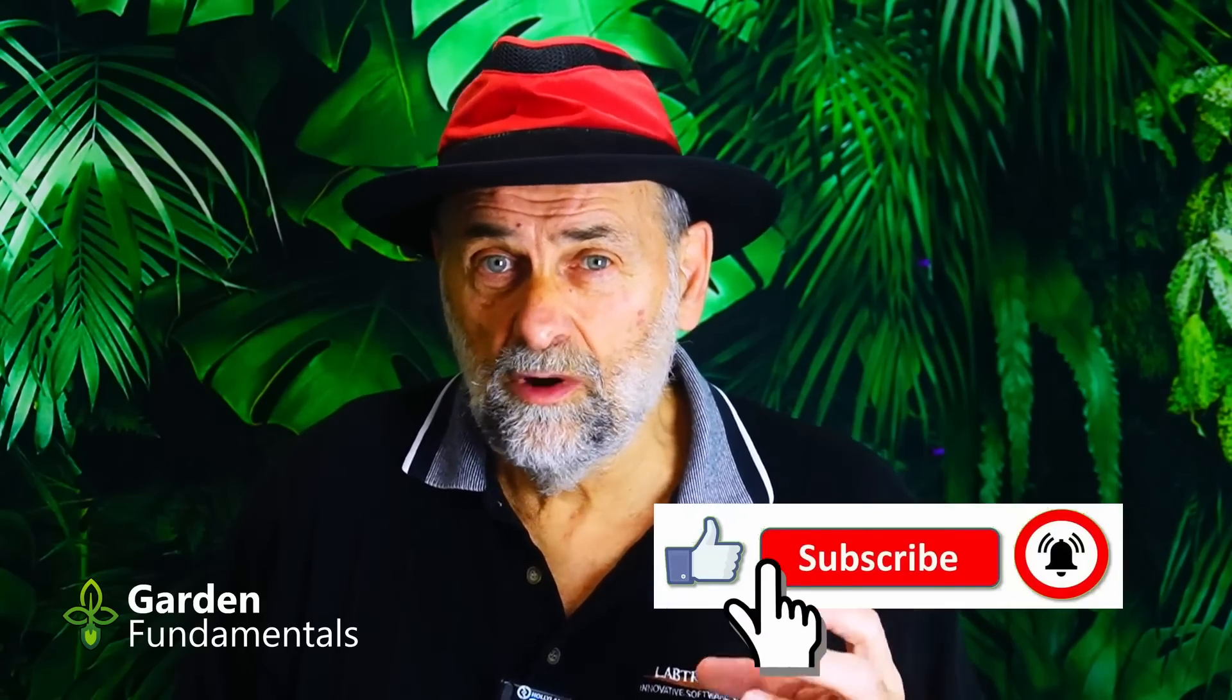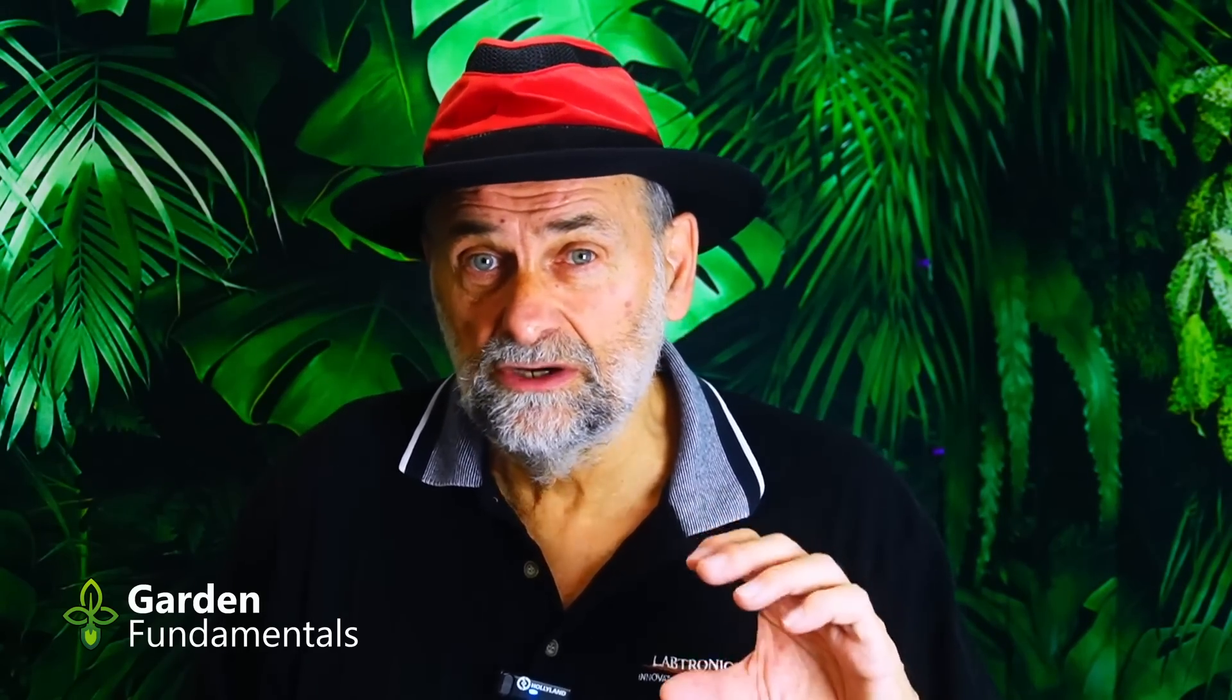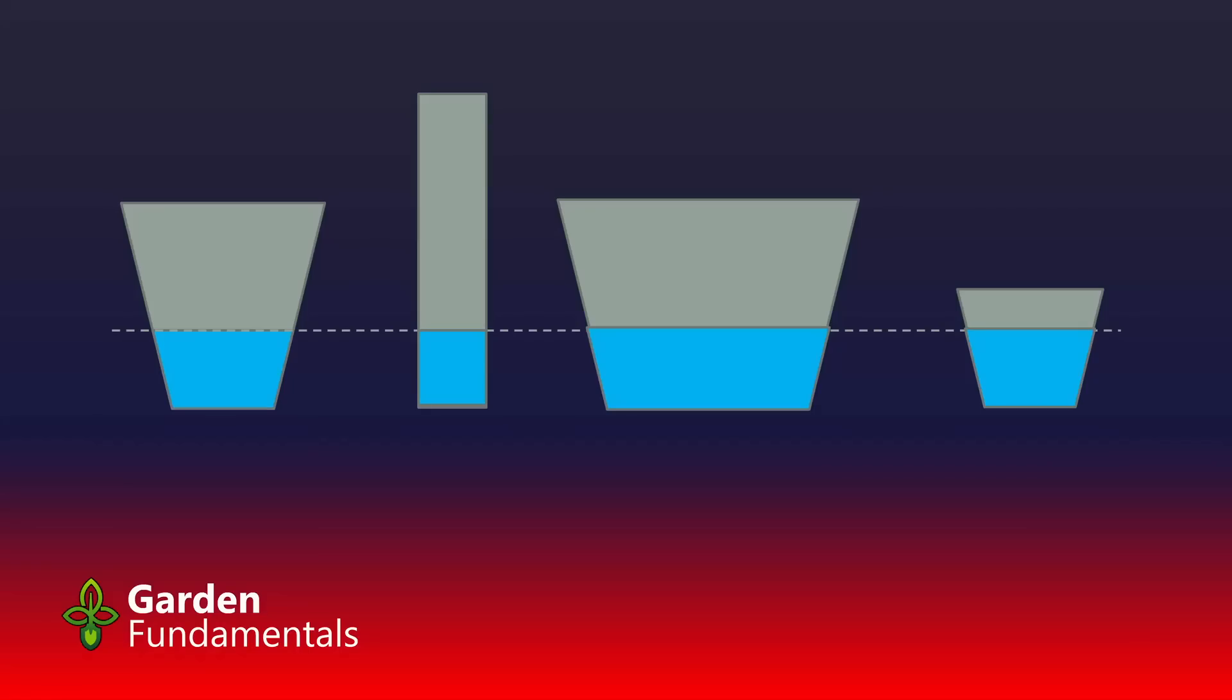Organic matter, things like peat moss and coir and compost, are stickier with water than things like sand. Large particles have larger pore spaces than smaller particles. So it's the quality of the soil that determines the height of the perched water table. It has nothing to do with the container.